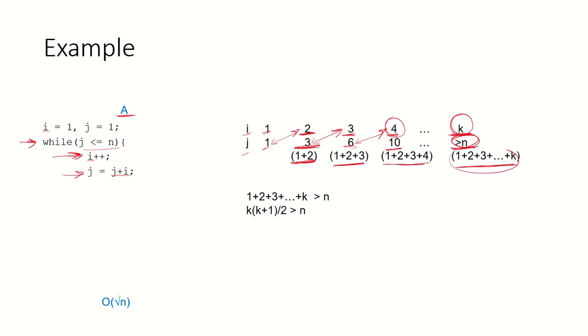What is the value of this when j will become n? We know that 1 plus 2 plus 3 plus k is going to be larger than n. This is the sum of that arithmetic series k times k plus 1 by 2 is larger than n, that means k is order of root n.